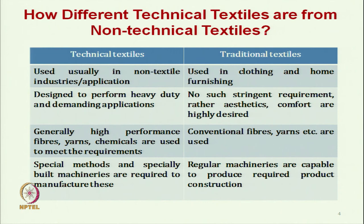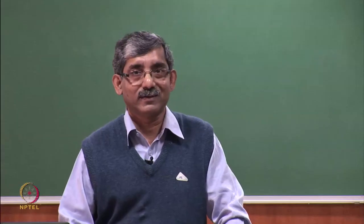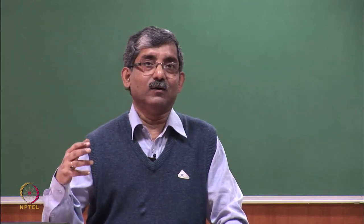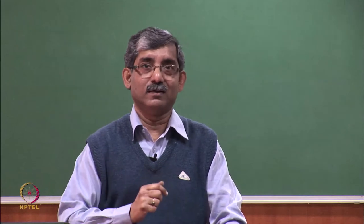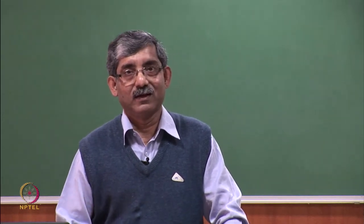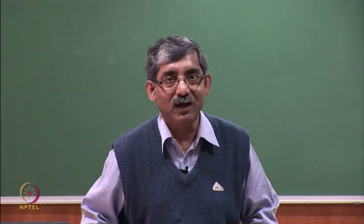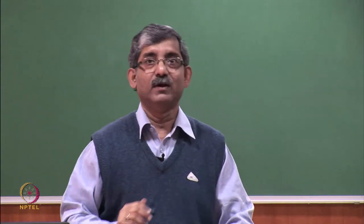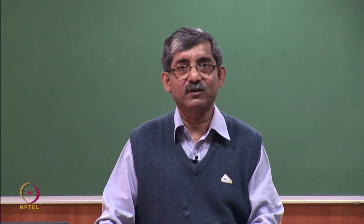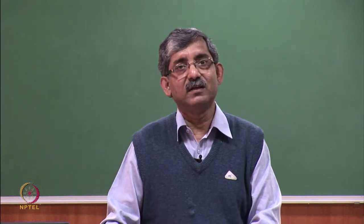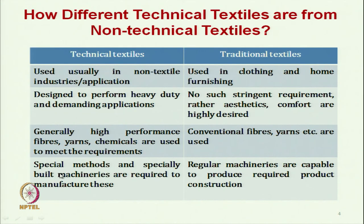Even in traditional textiles, strength is not that important, because once the product is developed or the production process is done, we do not need that much strength. Like in weaving, we need strength of yarn — that is enough — but when we come to the fabric area, basically in traditional textiles, aesthetic and comfort are the characteristics that are important. In technical textiles generally, we use high performance fibres, yarns, and chemicals required to meet the specific performance.